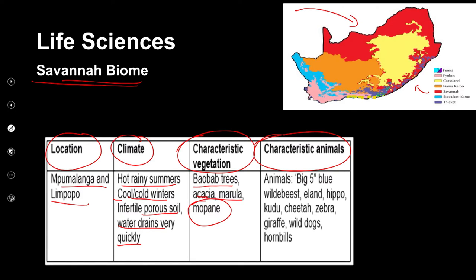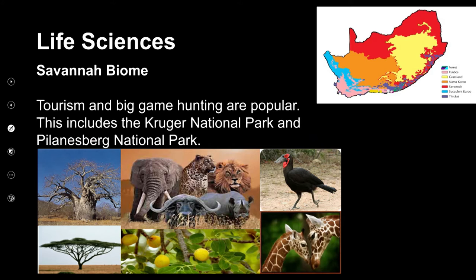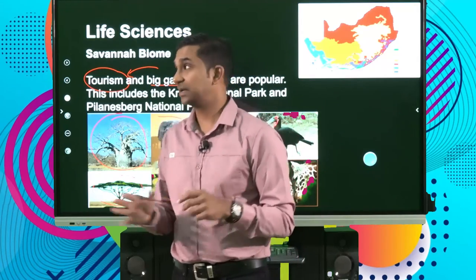The savannah biome is where you would find the big five, which are typically associated with South Africa. It's also home to wildebeest, eland, hippos, kudu, cheetahs, zebras, giraffes, wild dogs, and hornbills. Beautiful baobab and acacia trees are found here. These form tourist hotspots — the Kruger National Park and Pilanesberg National Park are areas typically found in your savannah biomes.